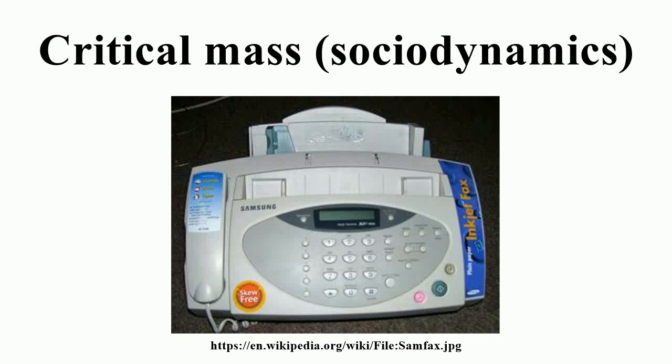In social dynamics, critical mass is a sufficient number of adopters of an innovation in a social system so that the rate of adoption becomes self-sustaining and creates further growth. It is an aspect of the theory of diffusion of innovations, written extensively on by Everett Rogers in his book Diffusion of Innovations. The term is borrowed from nuclear physics, where it refers to the amount of a substance needed to start a chain reaction.